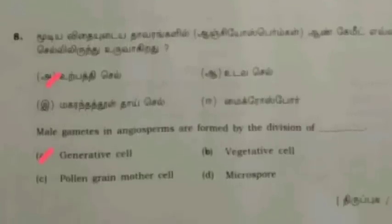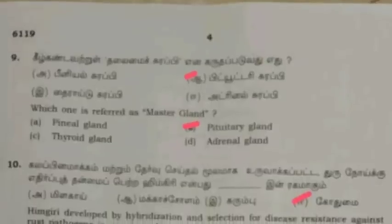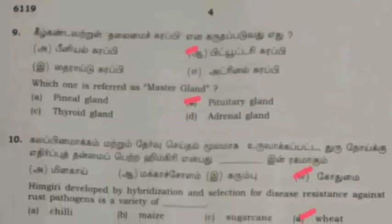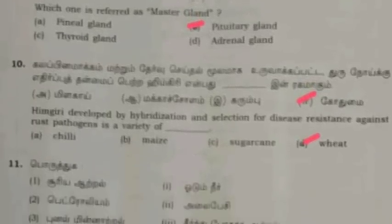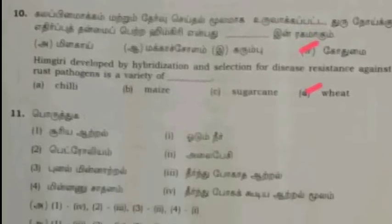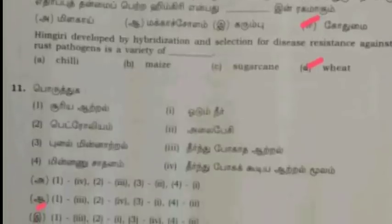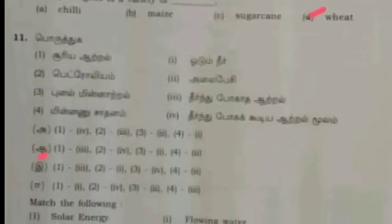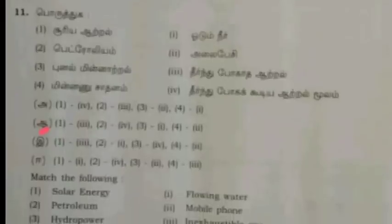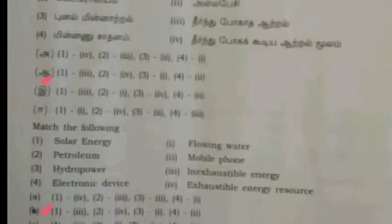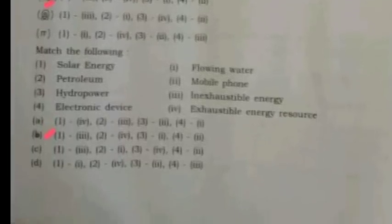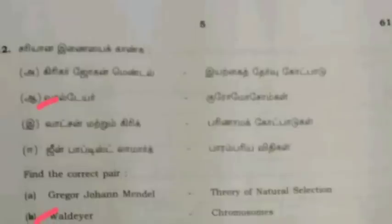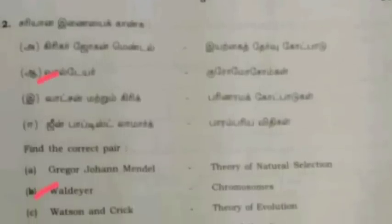The ninth one: which one is referred to as the master gland? B option is pituitary gland. The tenth one, human developed by hybridization — D option is VT. The eleventh one, match: B option is correct. The twelfth one, the last question, find the correct part — B option. The third one is called the maladyr and chromosome.